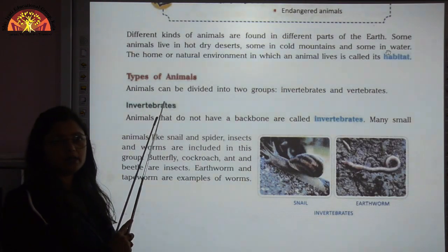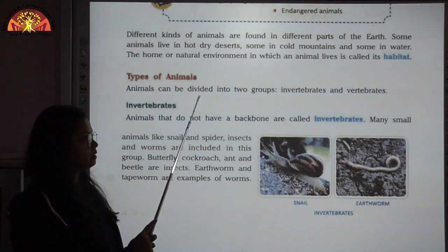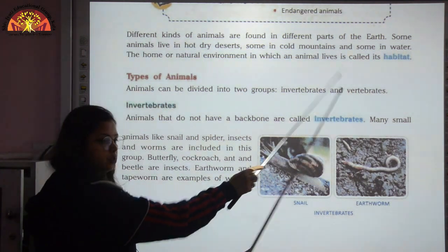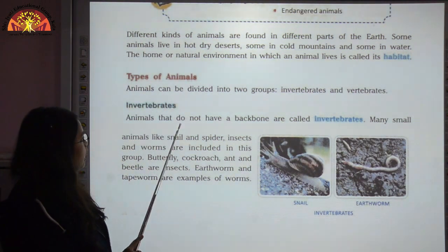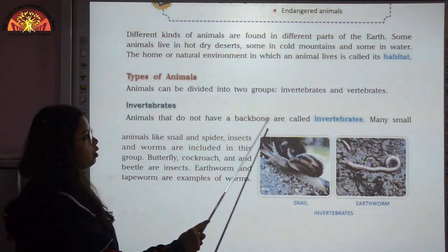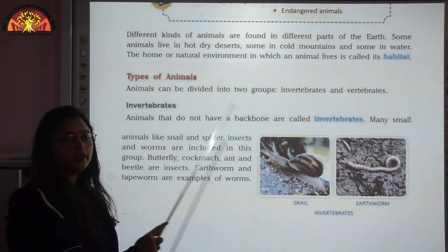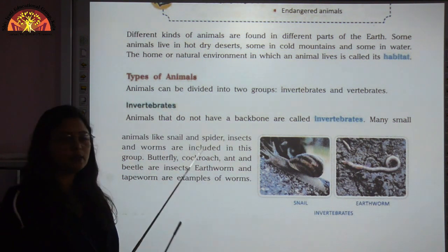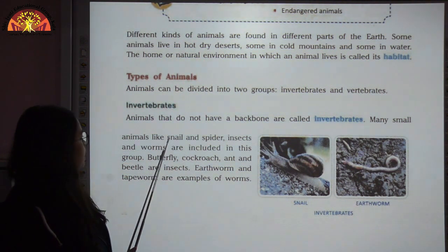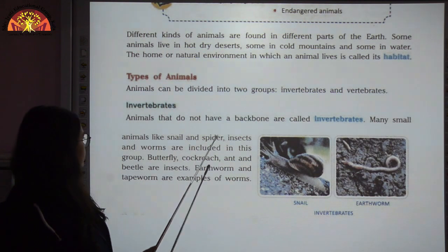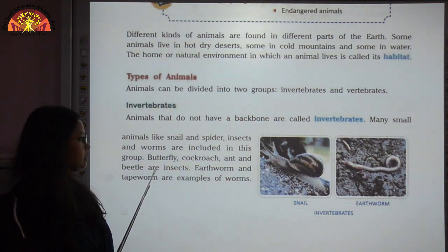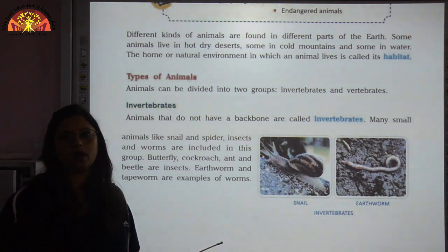Animals are divided into two categories: invertebrates and vertebrates. Invertebrates are the animals that do not have a backbone. Some examples of invertebrates are snails, spider, insects and worms like butterfly, cockroach, ant, beetle, and earthworm. These all are examples of invertebrates.